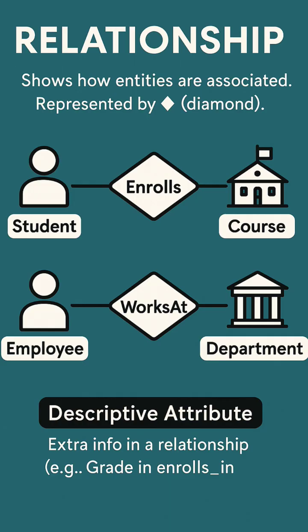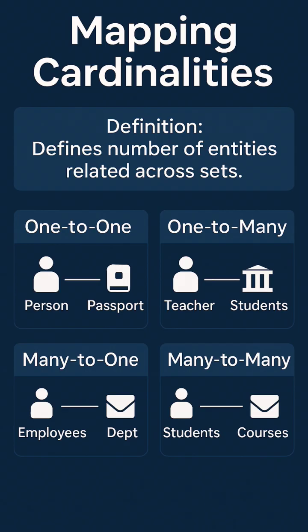Relationships connect these entities, showing how they interact — a student enrolls in a course, or an employee works in a department. Each relationship can also have descriptive attributes, such as a grade for an enrollment.